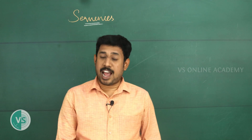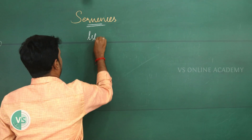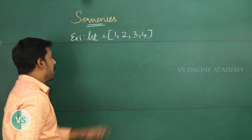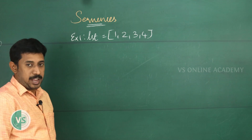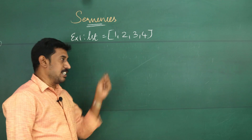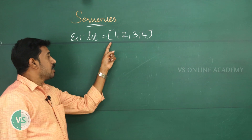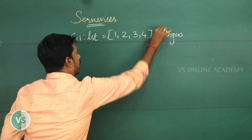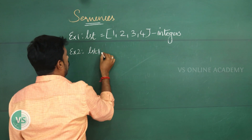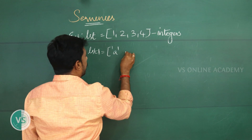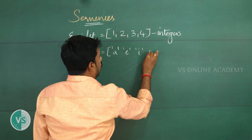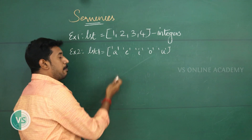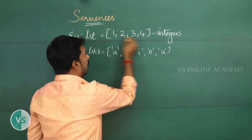Now we are going to see about list. List is a compound data type, which means it can have multiple items inside square brackets. For example, this list — simply called a variable or the name of the list — contains four values, all integers. Then look at example two: lst1 contains string values a, e, i, o, u. Each element inside the list should be separated by a comma.